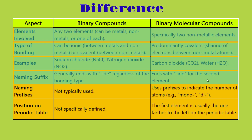For the naming prefix, in binary compounds it's not typically used. But inside of binary molecular compounds, prefixes are used to indicate the number of atoms — such as mono, di — and we're going to look at examples of these later on. For the position on the periodic table, in binary compounds it's not specifically defined. But for binary molecular compounds, the first element is usually farther to the left on the periodic table.